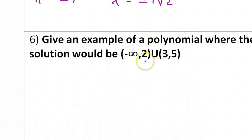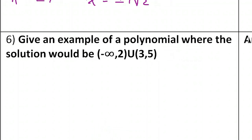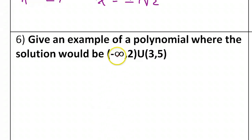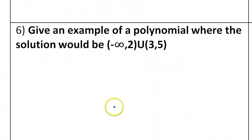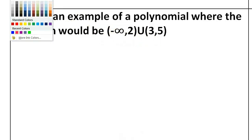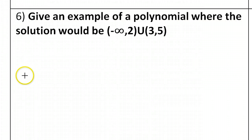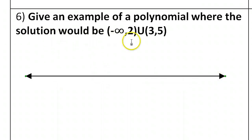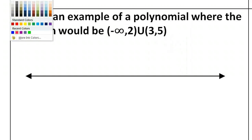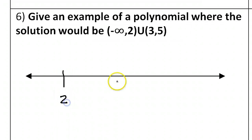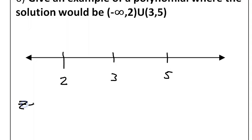Now let's do number 6: give an example of a polynomial where the solution would be negative infinity to 2 and 3 to 5. Let's sketch a graph of this solution and work backwards. Starting with our number line, I can see that 2, 3, and 5 are what we're dealing with. The main thing that tells me is that these are the zeros of the function — so the zeros are 2, 3, and 5.